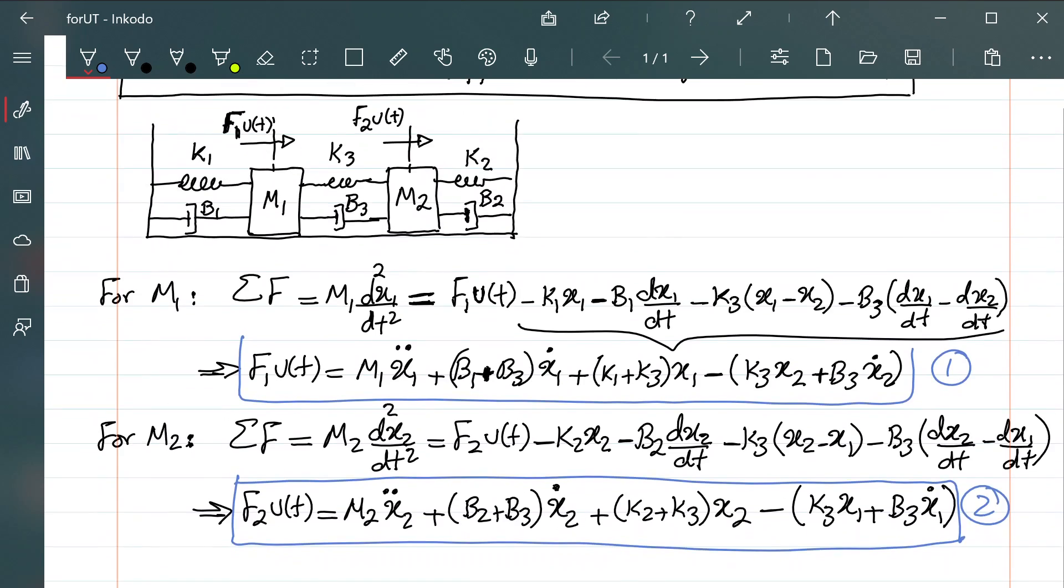So what I can do now, I can say, taking Laplace transforms, equation one becomes, via Laplace transform, so f1 u(t) becomes f1 over s, and knowing that, assuming that the displacement x1 and x2, and the speed, which is the derivative of displacement, and acceleration at time zero, before application of the force, basically, are just zero, basically, system is at a steady state before the forces are applied, so then there is no initial condition in the system.